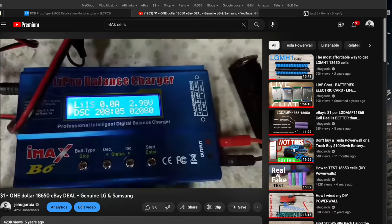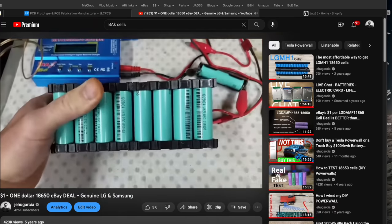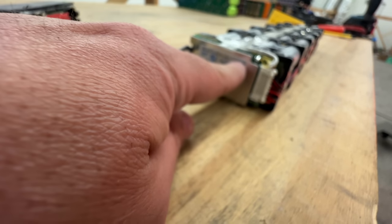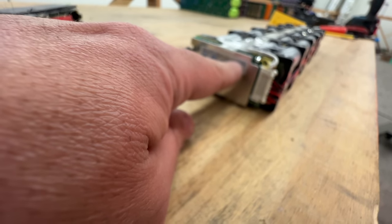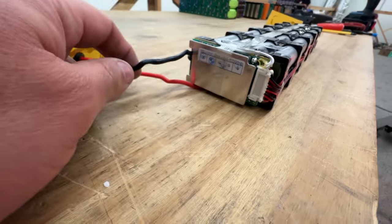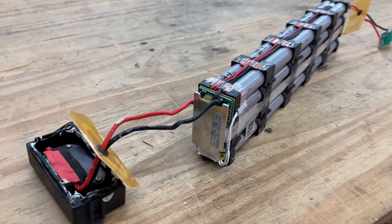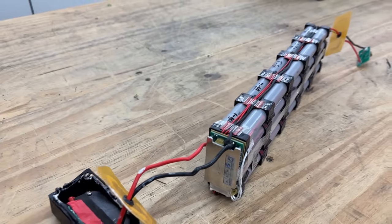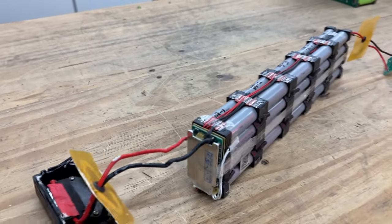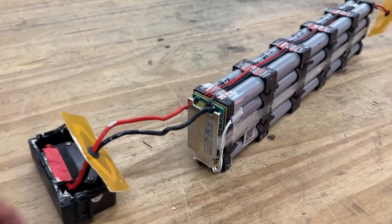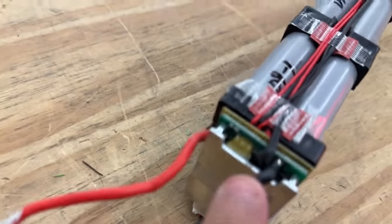Other than that, what we can see here is that this is a 10S, 20 amp BMS. So you can get 20 amps out of this pack right here. That's about 720 watts that this battery will likely be capable of giving you.